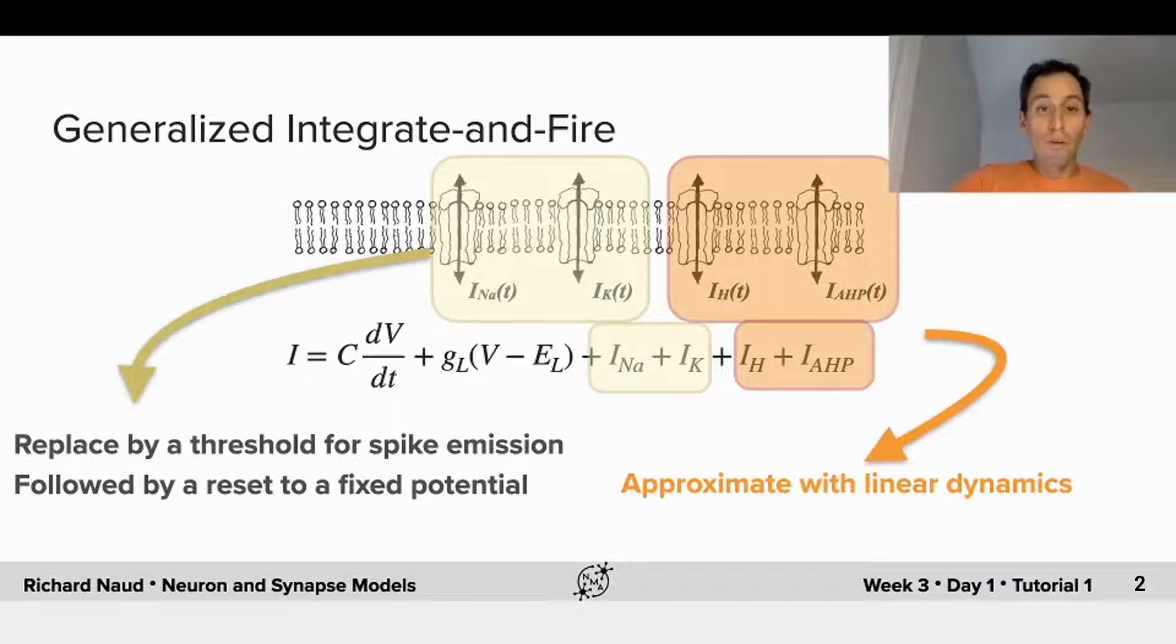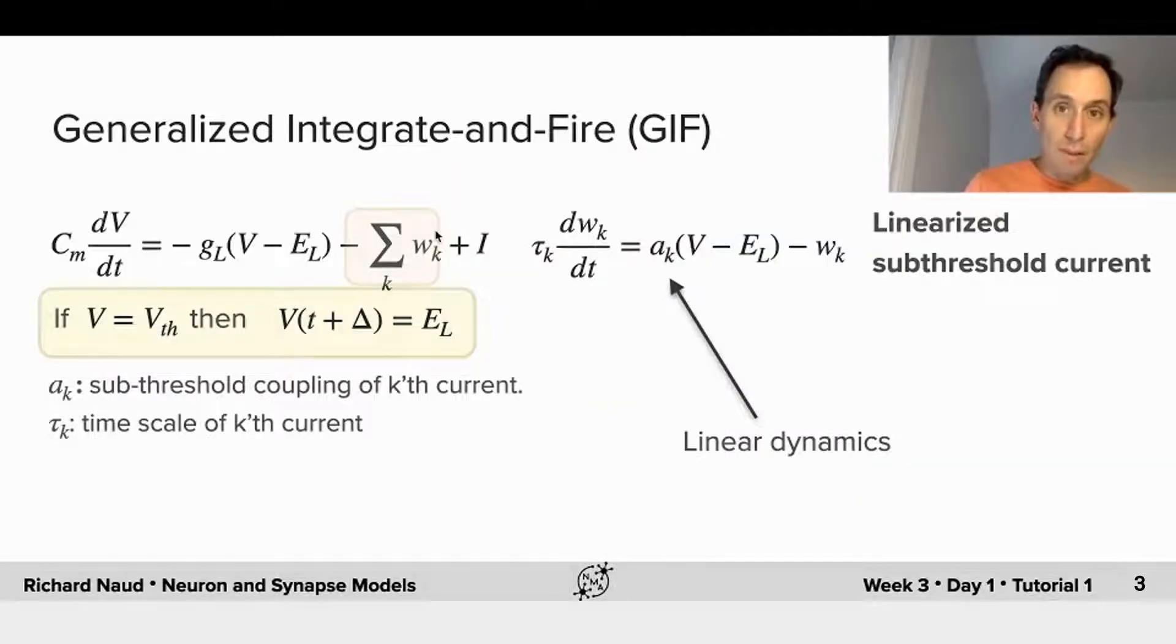So what we're going to do is consider an extension of the leaky integrate-and-fire, that is called the generalized integrate-and-fire, and the approach here is to replace the complex nonlinear equations that would normally describe the currents flowing from the ion channels with linear equations, and I will describe how accurate this is.